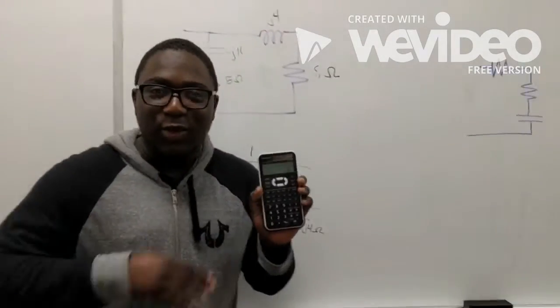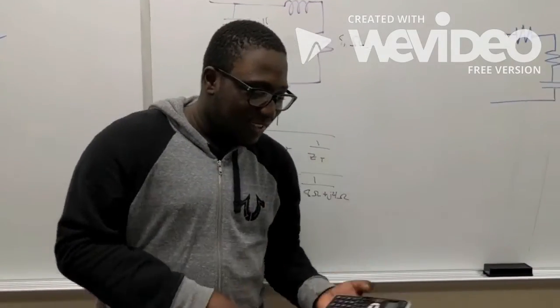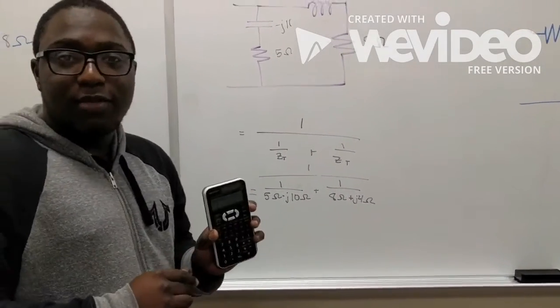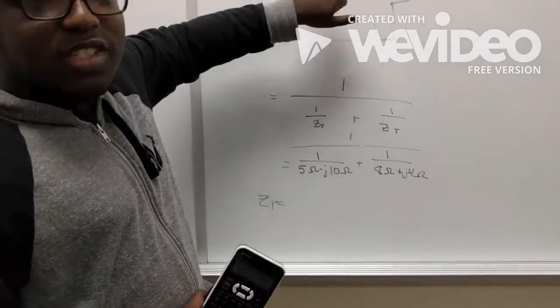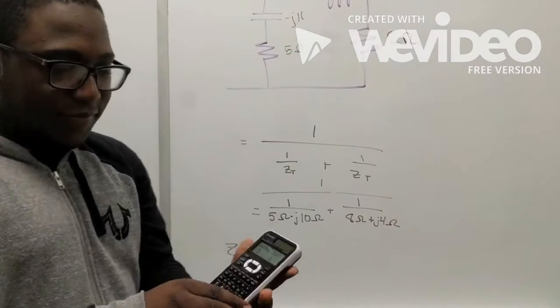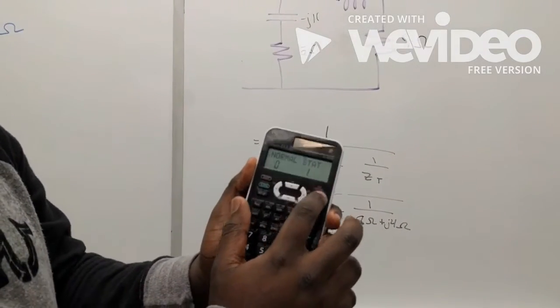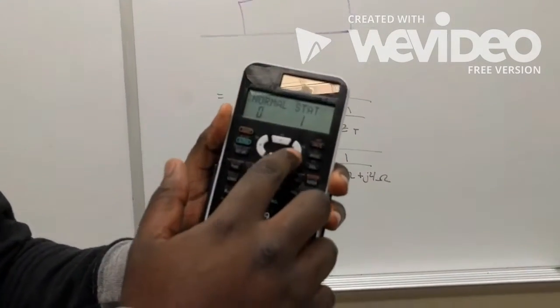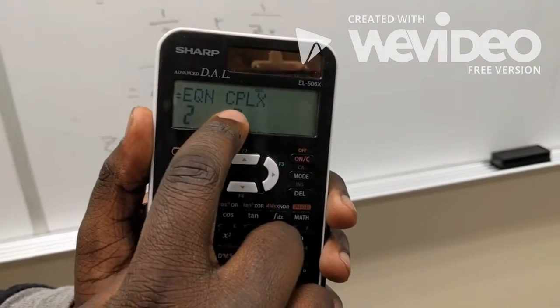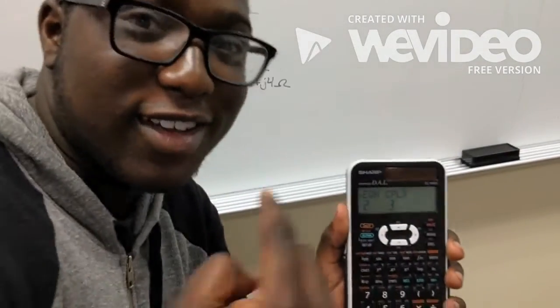To do this, we go back to our Sharp 506. The Sharp 506 has a complex mode that allows you to put in the Js from both the capacitor and the inductor. You hit Mode. Then, you continue on until you reach CPLX, which stands for complex.